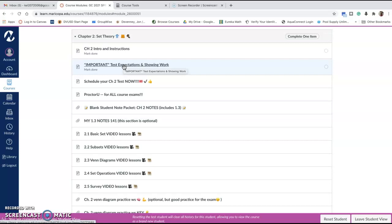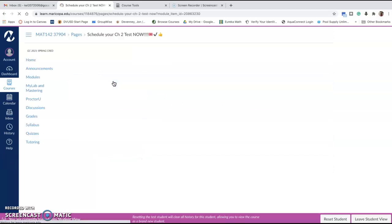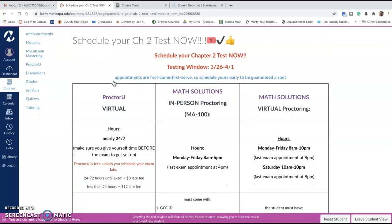So let's say you're ready to take our first exam over Chapter 2. Make sure that you go into your modules and you find this Schedule Your Chapter 2 test. Make sure you do this with enough time to get the spot that you want. You can see for each exam we have a testing window of when you can take that exam by its due date.